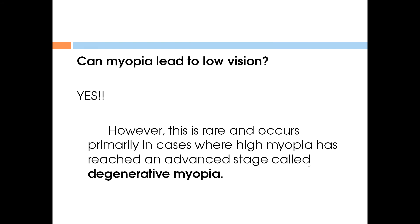Can myopia lead to low vision? Yes, although this is rare. In extreme circumstances, myopia or nearsightedness can lead to serious vision-threatening complications including blindness — primarily in cases where high myopia has reached an advanced stage called degenerative myopia. It is here that the uneven elongation of the eyeball damages the retina and other structures of the eye.